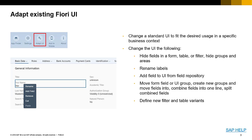For adapting existing Fiori UIs, users can change the look and feel of screens to adapt them to their organizations. You can do things as simple as hide fields, forms, templates, filters, hide groups, and user areas. We can rename labels to make them more relevant for the organization. We can add fields to the UI from our own field repository for each business object, move form fields or UI groups, create your own groups, combine fields and split them into combined fields, and define new filters and table variants.